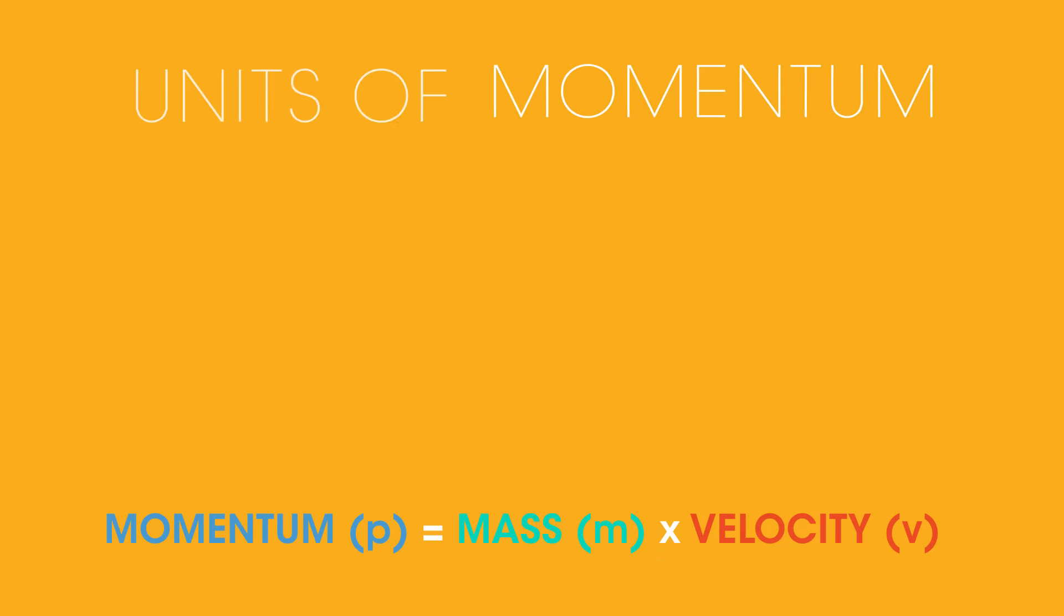So what are the units of momentum? Mass is measured in kilograms, and velocity in meters per second. So momentum equals kilograms times meters per second.